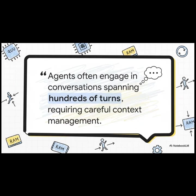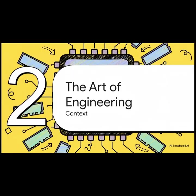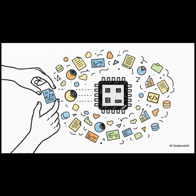And look, this isn't some minor fringe issue. The team over at Anthropic points out that these agent tasks can involve hundreds of individual steps. If you don't have smart, careful strategies to manage what the agent is paying attention to, it's pretty much guaranteed to fail. This is a huge real-world engineering challenge. So if that's the problem, what's the solution? This is where we shift from the challenge to the craft — this is the art of engineering context.